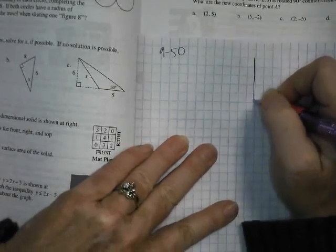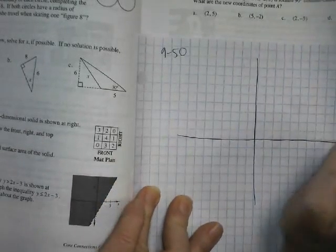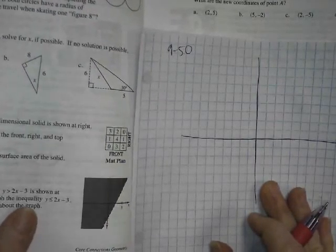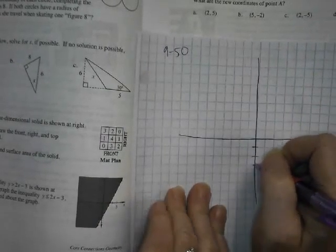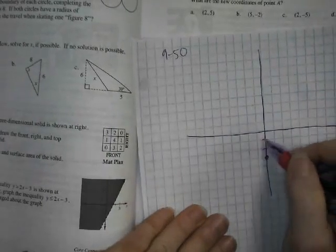Okay, so all I have to do is get y is less than or equal to 2x minus 3. The way that you graph inequalities is just graph the line y equals mx plus b. So b is negative 3, and the slope is still 2, so up 2 over 1.